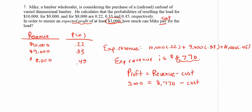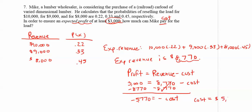We substitute profit as $3,000 and revenue as $8,770, and solve for cost. Subtracting $8,770 from $3,000 gives negative $5,770. Because the cost is being subtracted, dividing both sides by the negative cancels it out, giving a cost of $5,770. So Mike can expect to pay at most $5,770 to achieve an expected profit of $3,000.